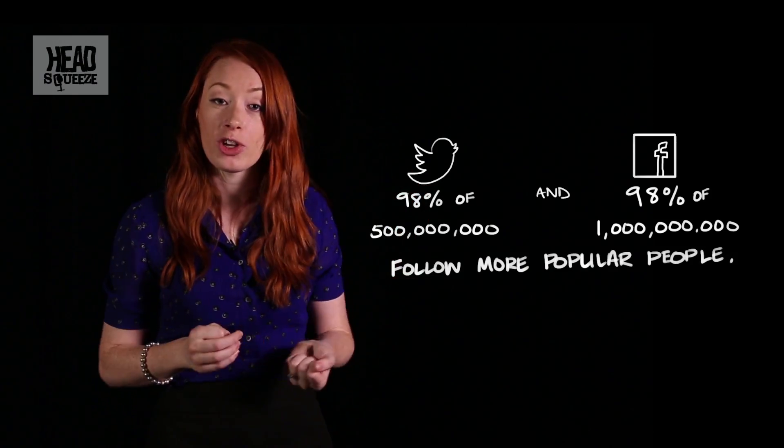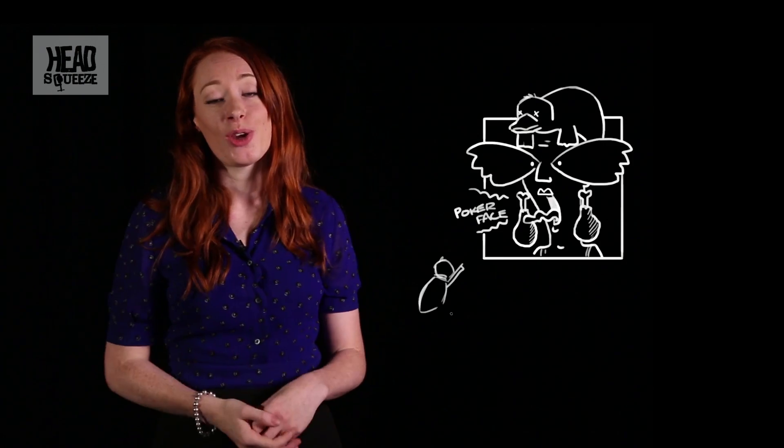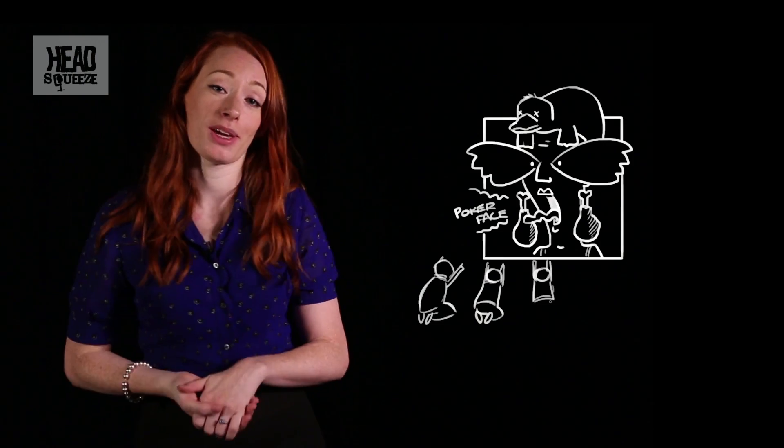So all those celebrities who don't follow you back, they sit at the middle of these networks in what we call the hubs, the people with the most connections. And they're skewing the networks or the averages for everybody else who's in their network. There might only be one Lady Gaga, but there are 40 million people whose network averages are messed up just because they follow her.